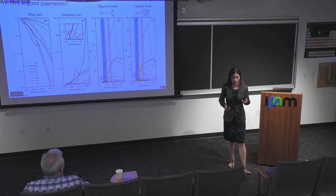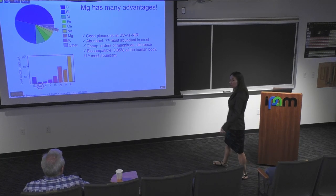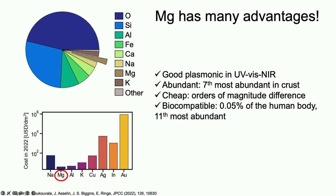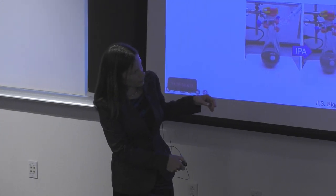We're interested in magnesium not just because it's a good plasmonic, but because it's widely abundant — really cheap — and it's truly biocompatible. You need magnesium to survive, and it is hence processable in your body. So we've been making magnesium. My group does synthesis now; I have zero background in synthesis, but hiring the right people and thinking about the problem hard enough, we managed to do that. This is a relatively simple synthesis: you're basically creating a reducing agent by putting an electron on an electron carrier.